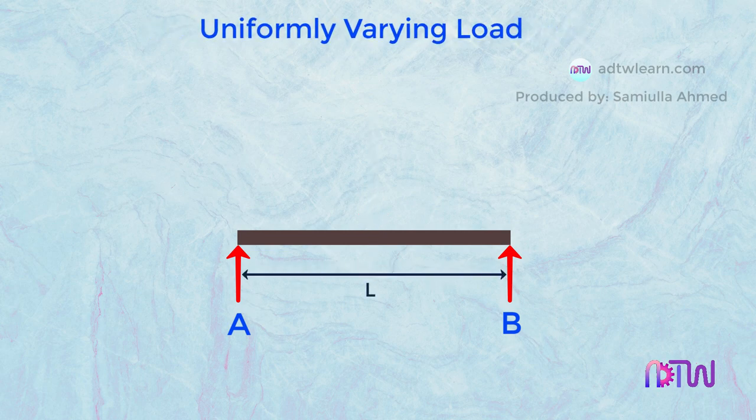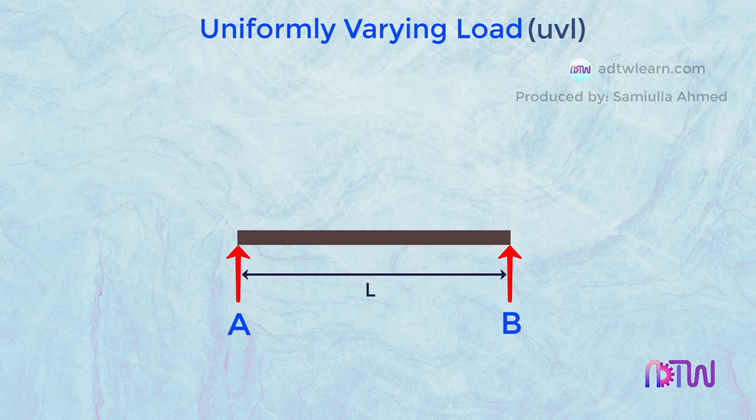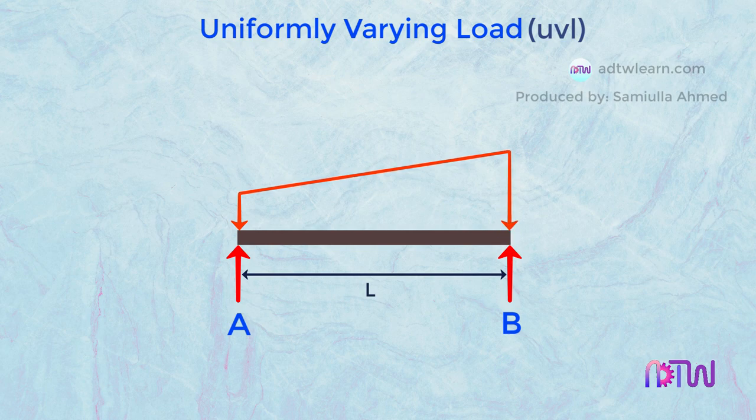Uniformly Varying Load, which is also called UVL. The load whose intensity increases from one end of the beam to the other end is called Uniformly Varying Load. Here there can be two situations.